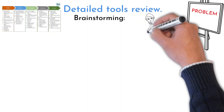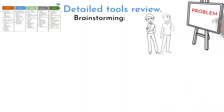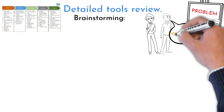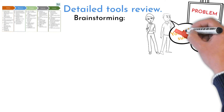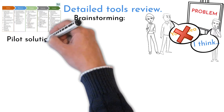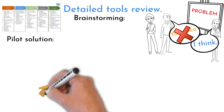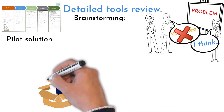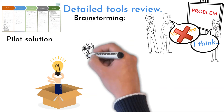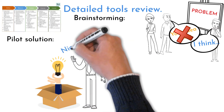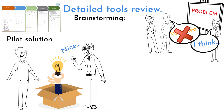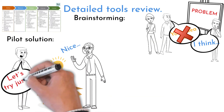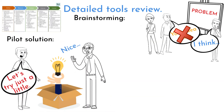Ideas Generation, or Brainstorming, is the team's effort to come up with ideas that could possibly improve the process. Remember — there are no bad ideas, only ones with higher importance. For Pilot Solution: once you have identified a solution, be cautious about implementing it. Try to implement a small portion in a small area to fine-tune it before changing the old process.